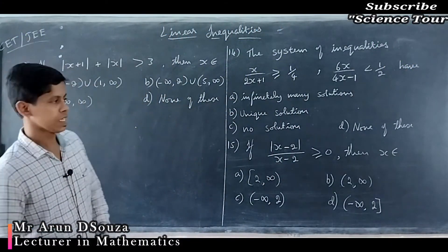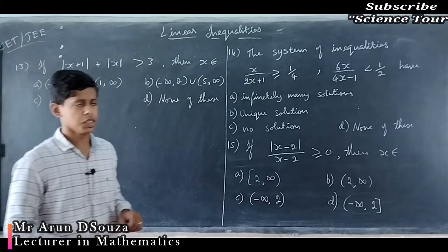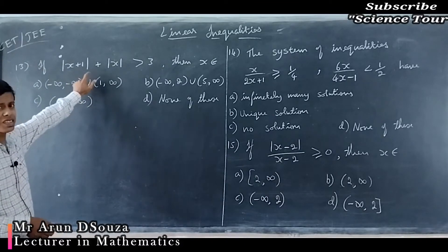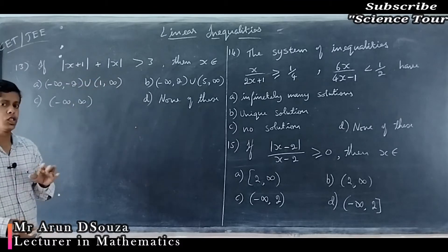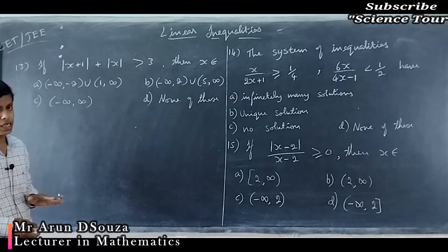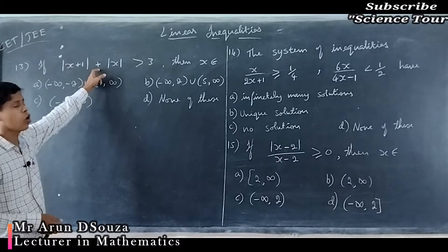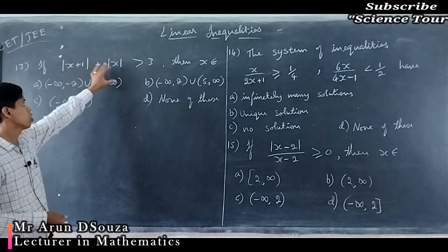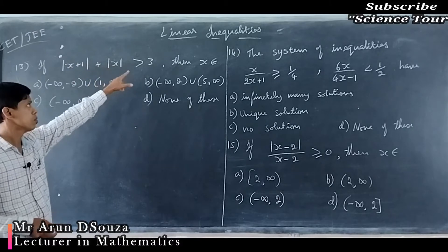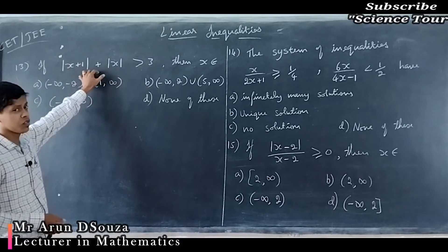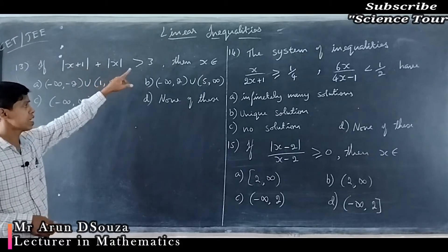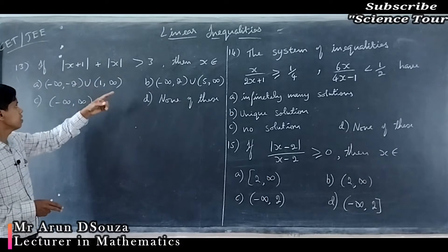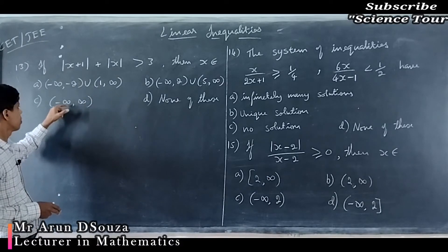Hello students and welcome to CET JEE classes on linear inequalities. We are on question number 13, which includes modulus. This question has to be treated differently and you have to find the common region. You have an addition of two modulus functions and both must satisfy the condition that the quantity is greater than 3.